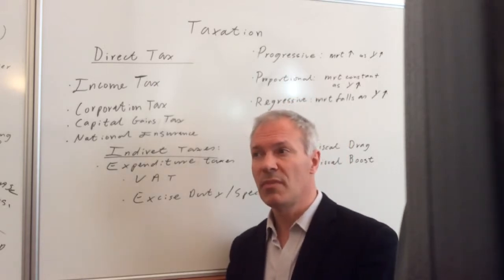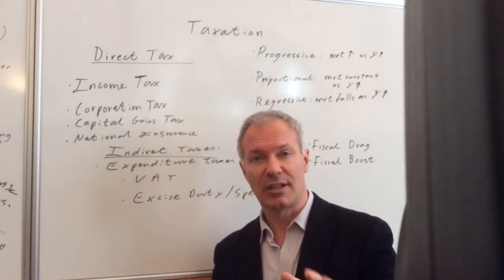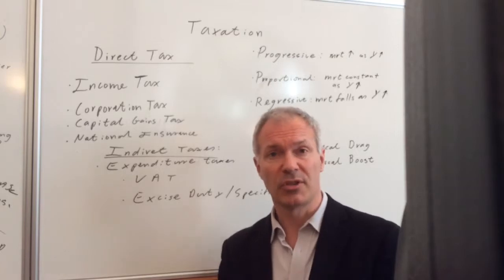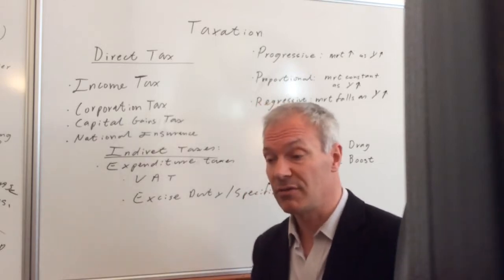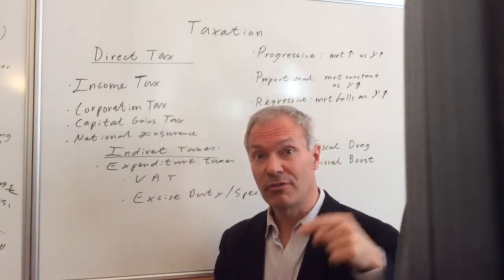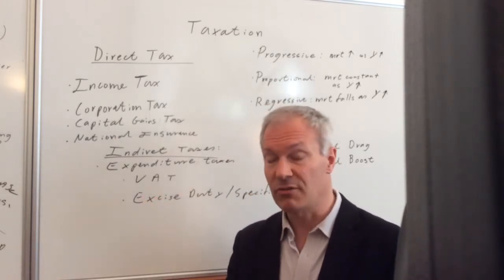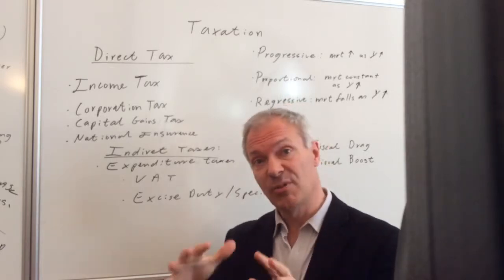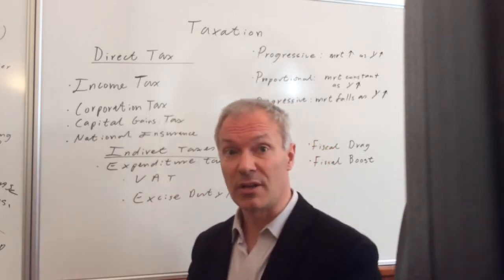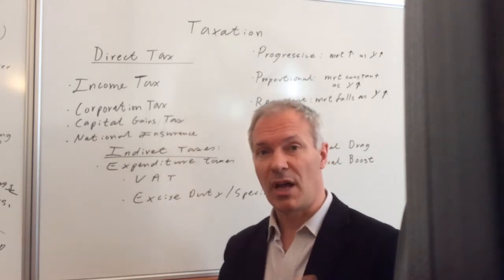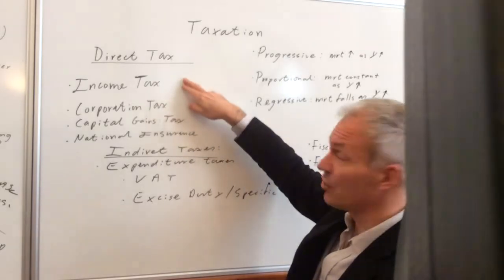For example, you might pay no tax on the first £10,000 of what you earn — that's called the tax allowance. Then you might pay 20% on the next portion up to £30,000. Over £30,000 you might pay 40% until you reach £60,000, and then over £60,000 you might pay 50%. That's fairly progressive because as your income goes up, your marginal rate of tax will increase, as will your average rate of tax. So income tax in many countries is progressive.